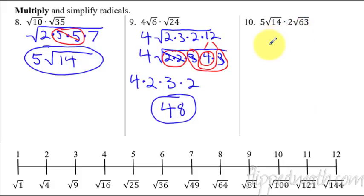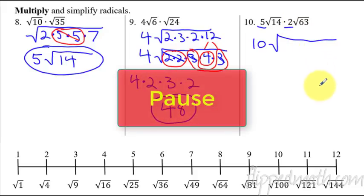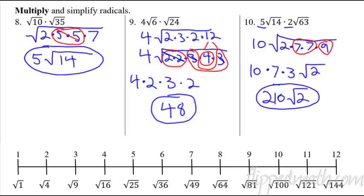Number 10 you're going to try on your own. When you're multiplying, these coefficients just multiply: 5 times 2 is 10, radical — then you finish this off. Pause now and we'll see if you get the same answer. The answer is 20 radical 2. I broke 14 into 2 times 7, saw the buddy pair of 7s and brought that out, and 9 was already a perfect square so I brought that out as a 3.